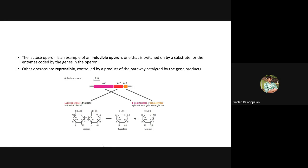Lac A codes for transacetylase. This enzyme ensures that none of the galactoside derivatives accumulate in higher concentration inside the cell, because that could lead to toxicity. It eliminates galactosides out of the cell regularly to avoid toxic effects. So: beta-galactosidase handles the actual breakdown of lactose; lactose permease brings lactose inside the cell; and transacetylase ensures galactosides do not accumulate to toxic levels.